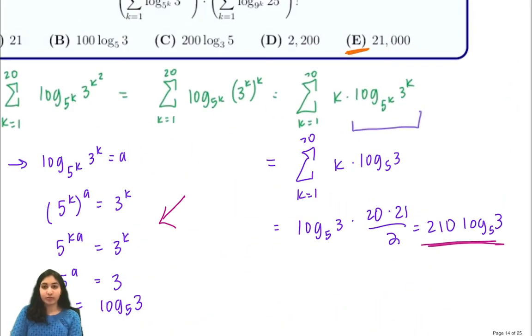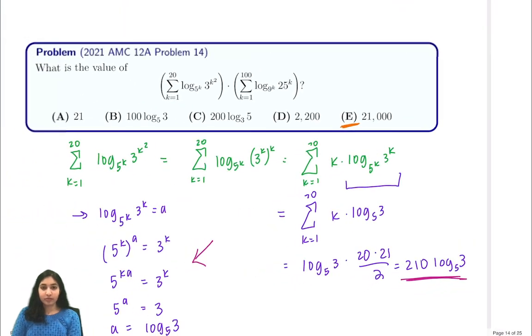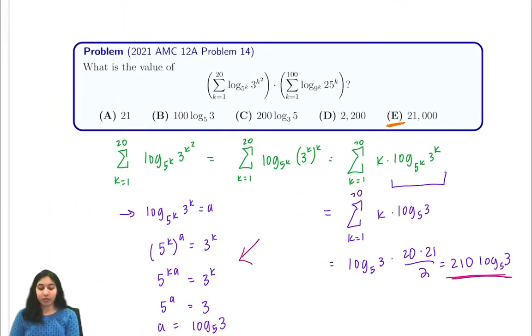So that's going to be your answer for this problem. Just to recap, we took our complicated expression and broke it down using this key observation that log base 5 to the k of 3 to the k was just equal to log base 5 of 3, and we applied it in both of our expressions and found that their product was 21,000. Thanks for watching.